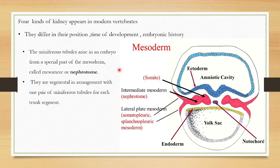The zygote divides many times to form a morula. It converts to blastula, then forms the gastrula. Gastrula has three germ layers: inner endoderm, middle mesoderm, and outer ectoderm.